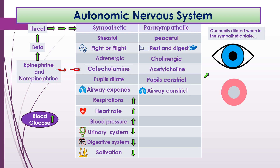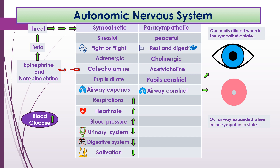The airway actually constricts in the parasympathetic state as well. Not meaning you can't breathe, but because it expanded in the sympathetic state, it constricts to return to normal. A medication that elicits this response can cause more airway constriction. Your respirations go down, your heart rate goes back down, and blood pressure goes back down.